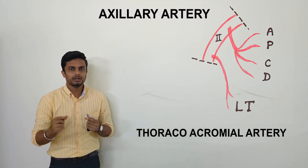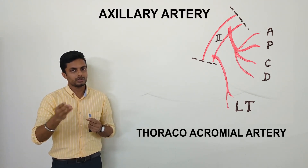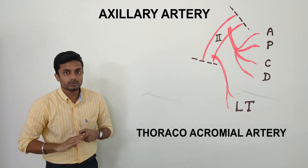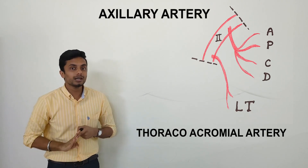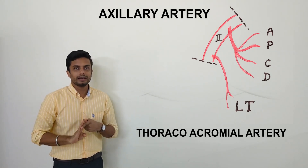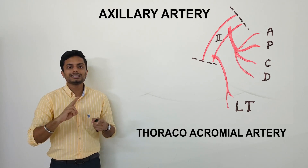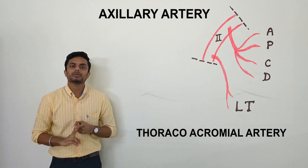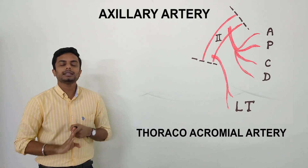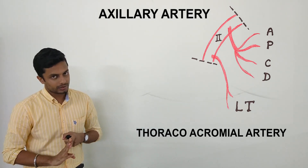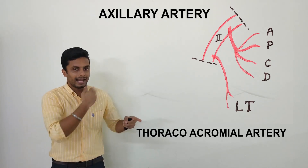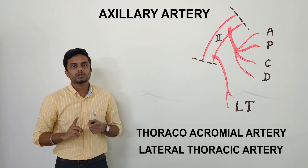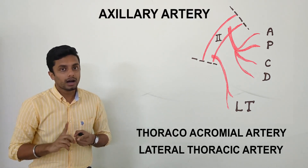The thoracoacromial trunk is called a trunk because it further divides into smaller branches — specifically four branches, which we will discuss shortly. The second branch arising from the second part of the axillary artery is the lateral thoracic artery, which particularly supplies the lateral aspect of the thoracic region. So those are the two branches from the second part.